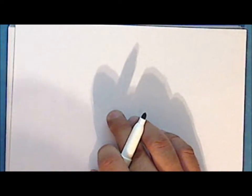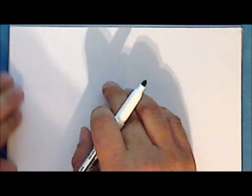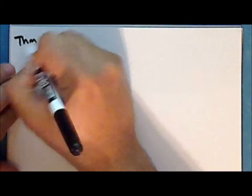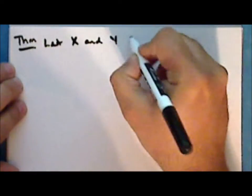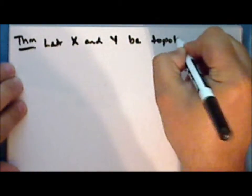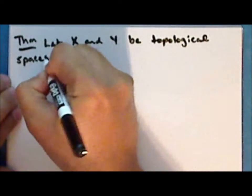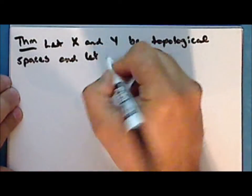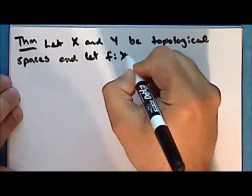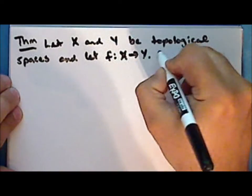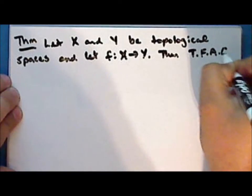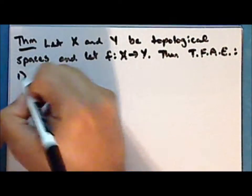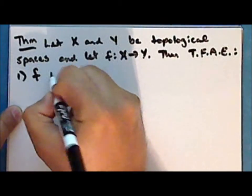Now I will roll the second exercise into a much more inclusive result. Let X and Y be topological spaces and let f be a function from the space X into the space Y. Then the following are equivalent. The first condition is that the function f is continuous.